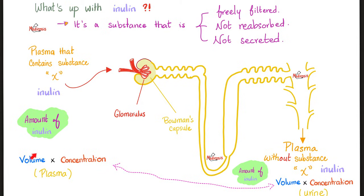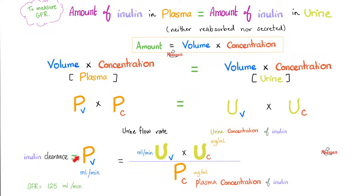Whose volume is that? Plasma volume. And that concentration is the concentration of inulin in the plasma. On the other side, that's my urine volume per minute — the urine flow rate — and the concentration of inulin in the urine. I know the inulin concentration in the plasma and I can measure urine volume per minute and urine inulin concentration. The only unknown is the plasma volume, which equals the clearance of inulin — the same as the GFR.